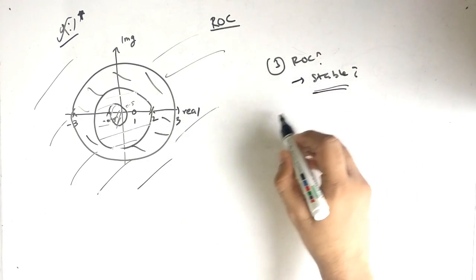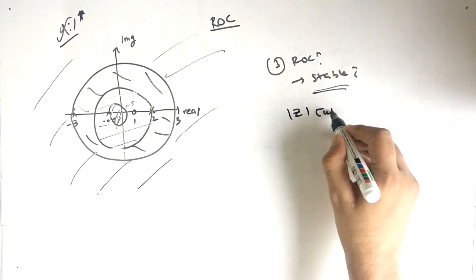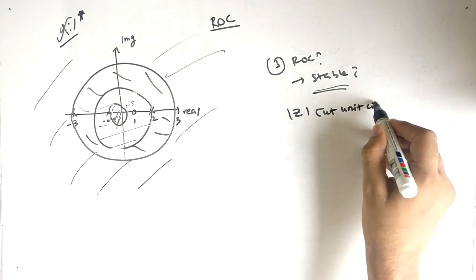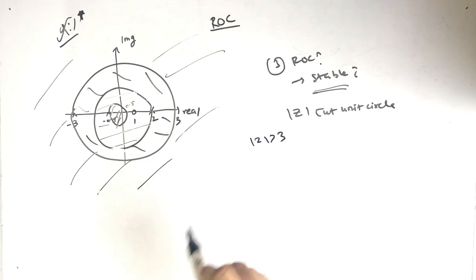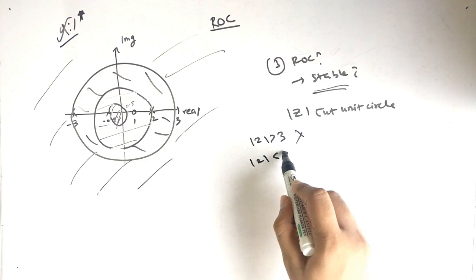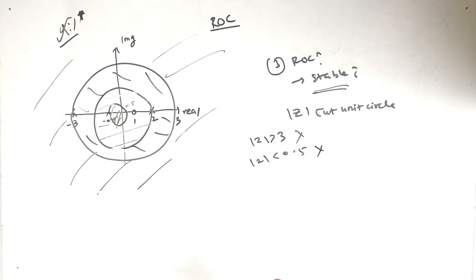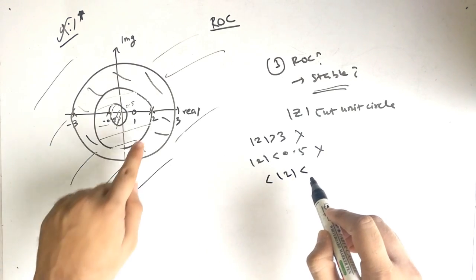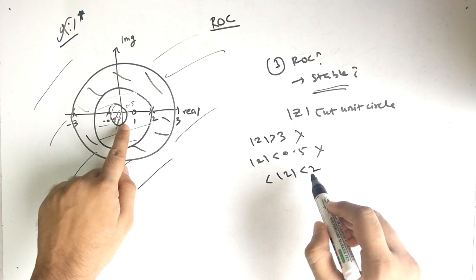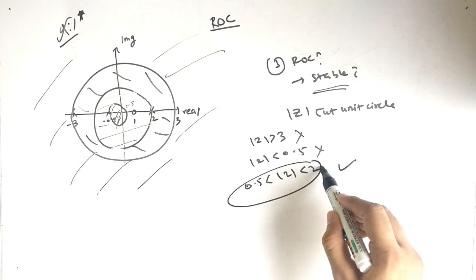For stability, the ROC must include the unit circle. |z| > 3 does not cut the unit circle, so it is not stable. |z| < 0.5 also does not cut the unit circle. However, the region 0.5 < |z| < 2 does cut the unit circle, so this ROC corresponds to a stable system.